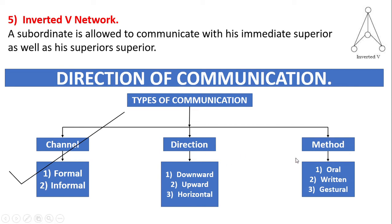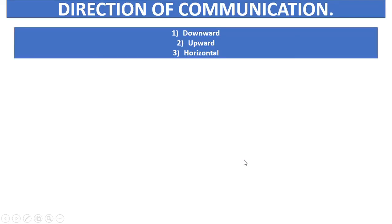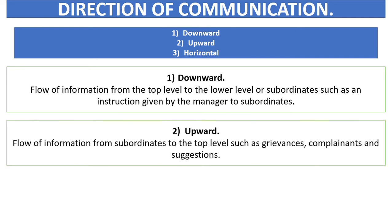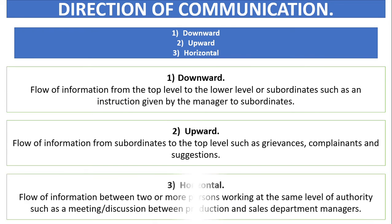We have already covered channels of communication in previous lectures. Now, regarding direction: downward direction is the flow of information from top-level management to lower-level management, such as instructions given by a manager to subordinates. Upward direction is when subordinates talk to the top level. Horizontal direction is the flow of information between two or more persons working at the same level of authority.